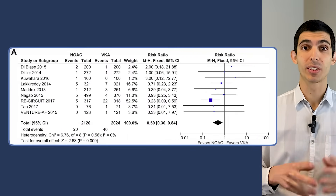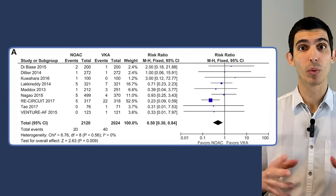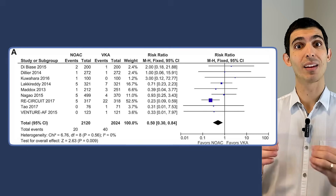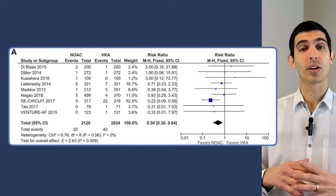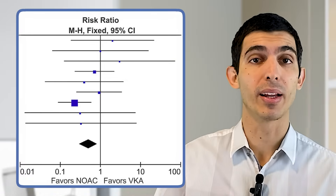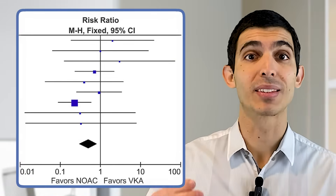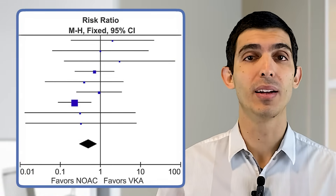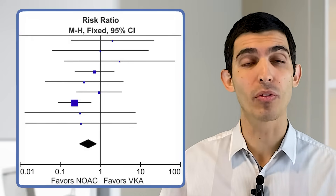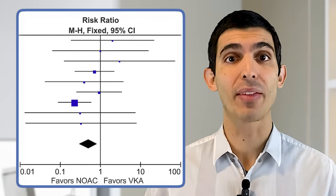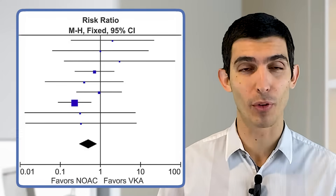I like to define meta-analysis in the following way: it is a quantitative synthesis of studies that are similar to each other. Here is an example — a meta-analysis that I published in one of the best journals in cardiac electrophysiology. It was a very simple and straightforward idea: we compared NOACs like apixaban and rivaroxaban to vitamin K antagonists like warfarin in patients who have catheter ablation for AFib, for atrial fibrillation. It's a very simple idea.